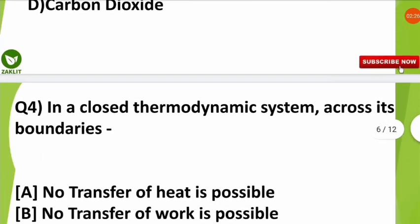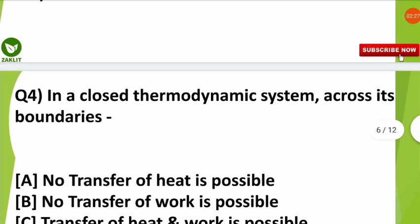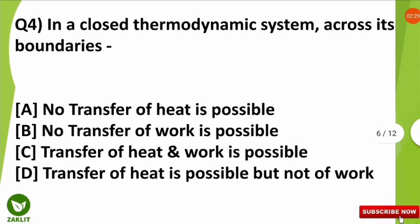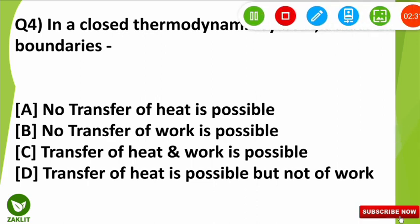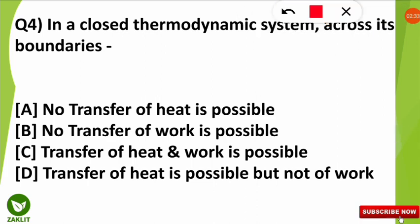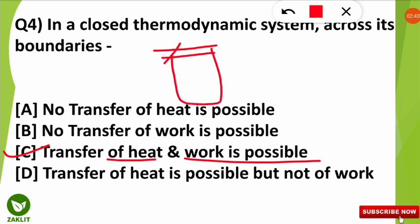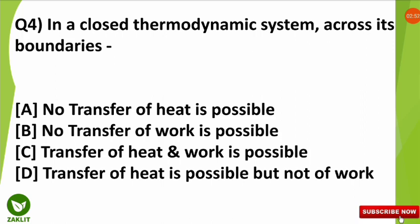The next question was: in a closed thermodynamic system, across its boundary, which of the following is possible? The correct option is C — transfer of heat and work is possible in a closed thermodynamic system. However, the transfer of matter cannot be exchanged, but heat and work is possible.